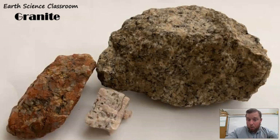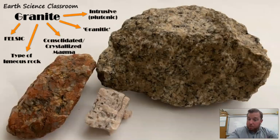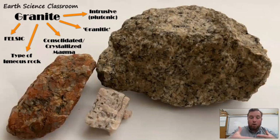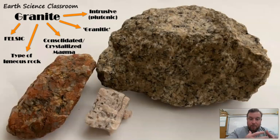Certain mineral mixtures can give you an idea of the environment where granite was formed and the time it took to form. To begin with the basics, granite is an intrusive igneous rock — it's plutonic. It forms from cooling magma very slowly, deep in the earth in very hot environments, so the minerals have time to arrange themselves and become solid over a long time.